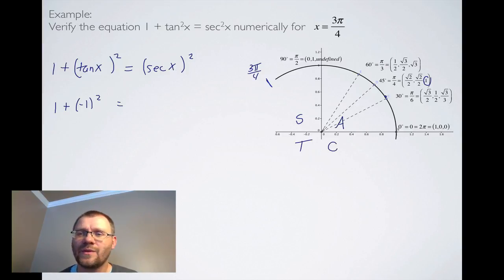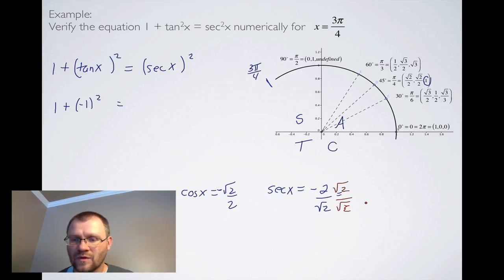Secant x, we don't have on the unit circle, but we do have cos x. We know that cos x is, in this case, root 2 over 2. We're also in the second quadrant, so that makes it negative root 2 over 2. To find out what secant x is, we take that and we flip it, so it's negative 2 over root 2. We can't have a root in the denominator, so we will multiply the top and the bottom by root 2. We get negative 2 root 2 on the top over plain old 2. We can plug that into the equation now as well. These 2's actually cancel each other out, so we just get negative root 2 squared.